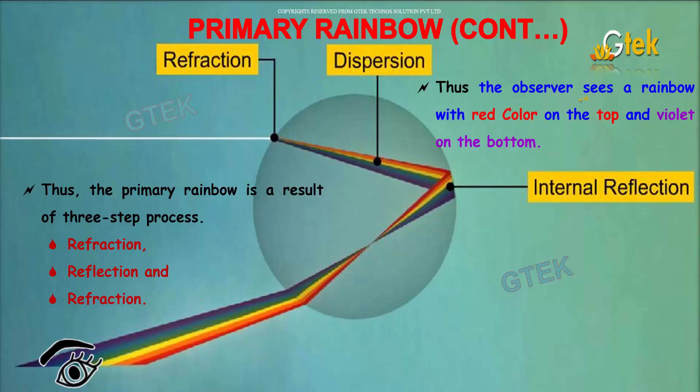Thus, the observer sees a rainbow with red color on the top and violet on the bottom.